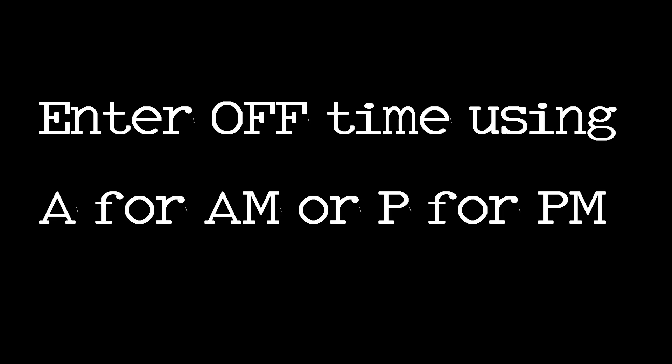Enter new number. Then press Pound. Enter off time using A for A.M. or P for P.M. Enter phone number. Enter time, then press A.M. or P.M. Erase special status for.